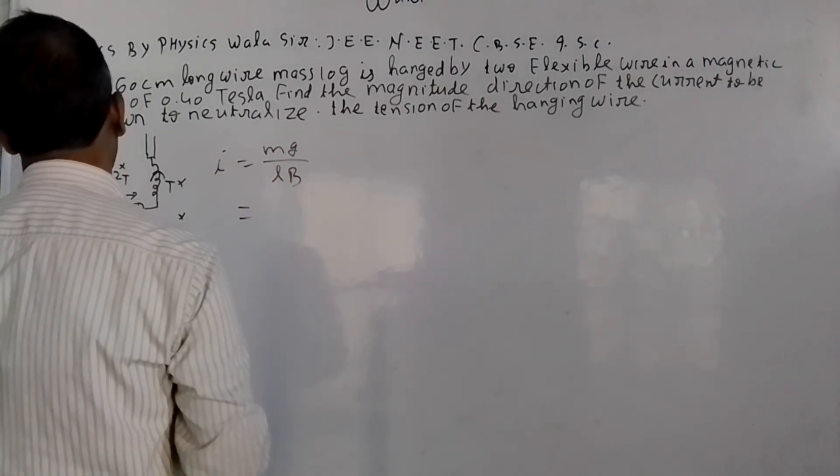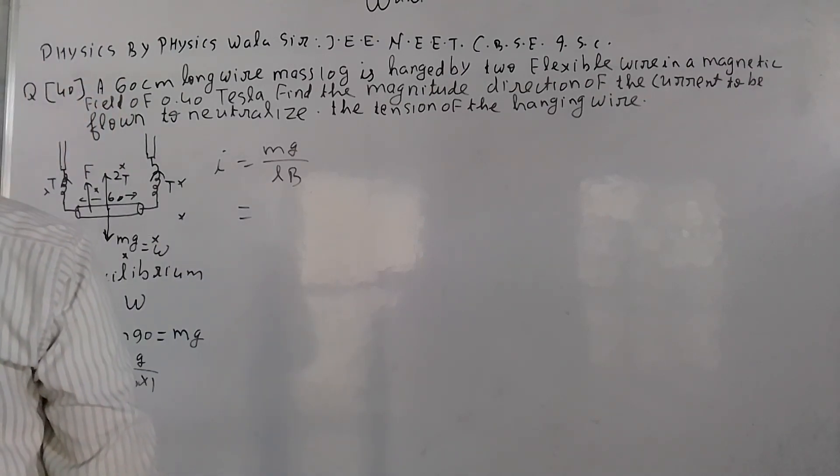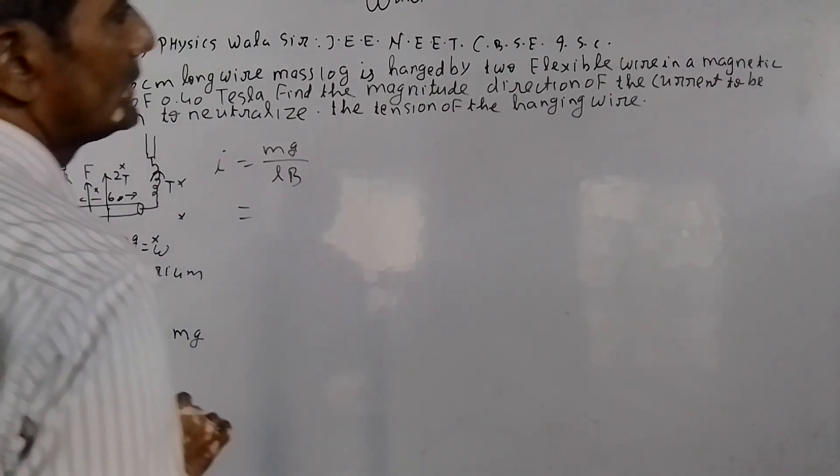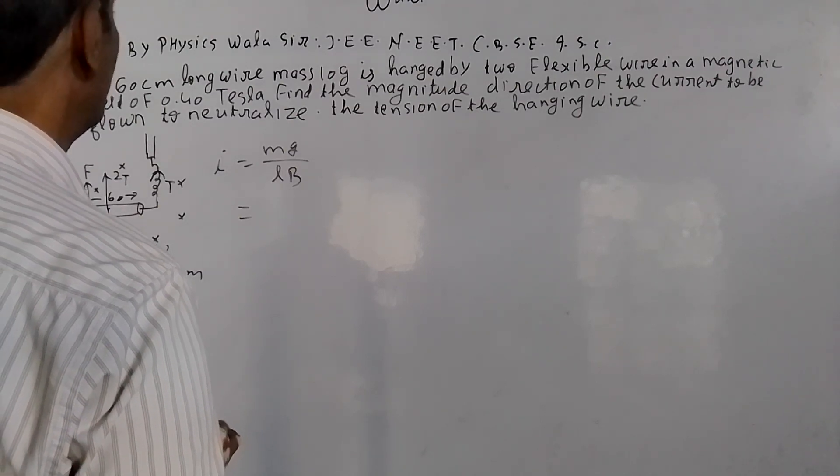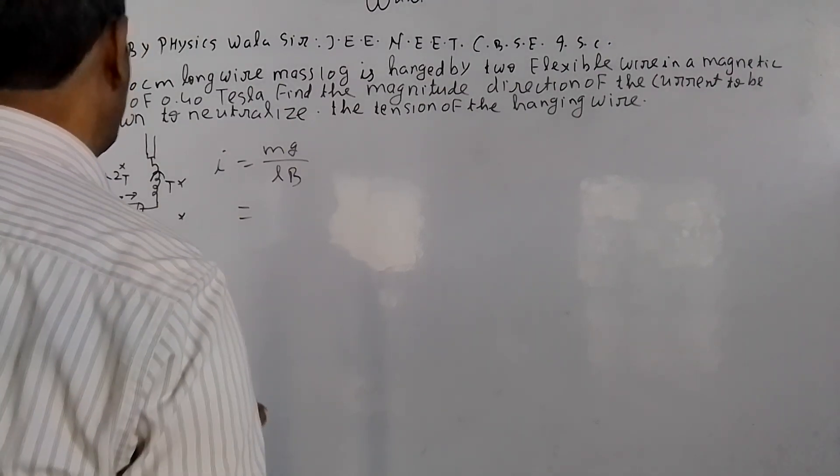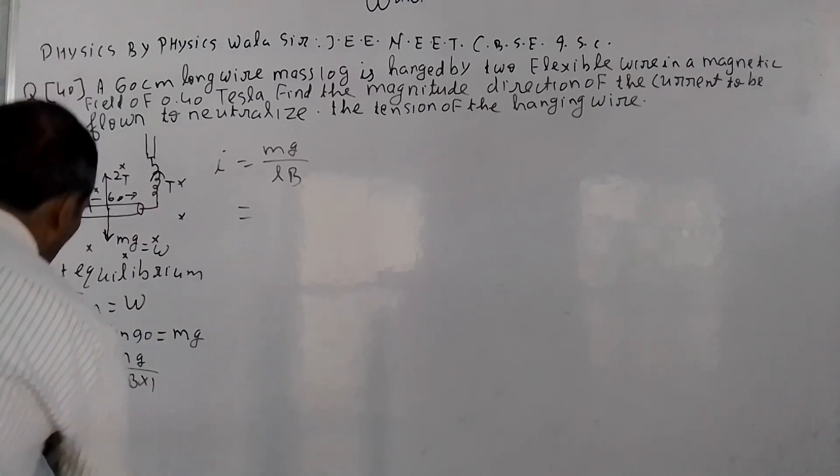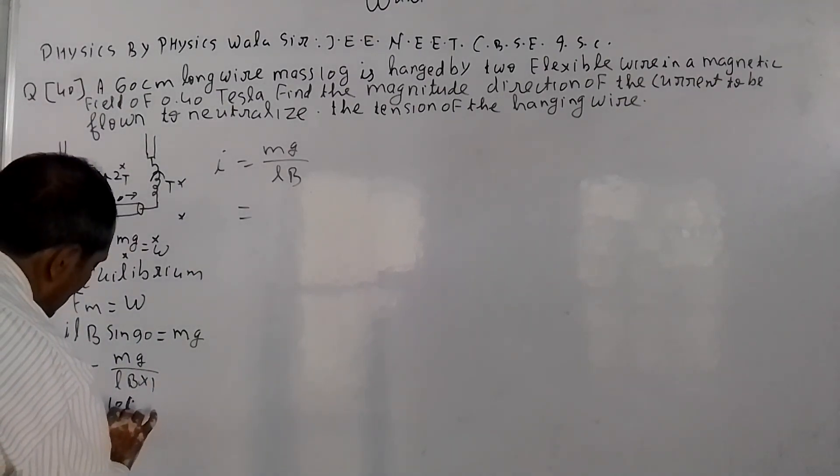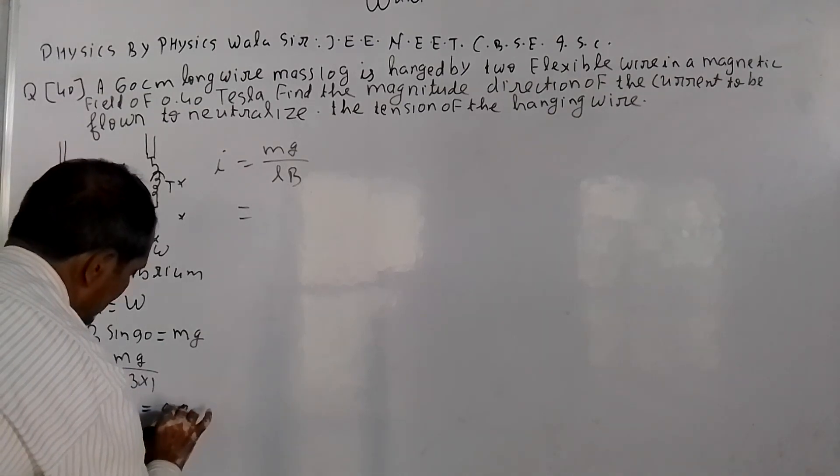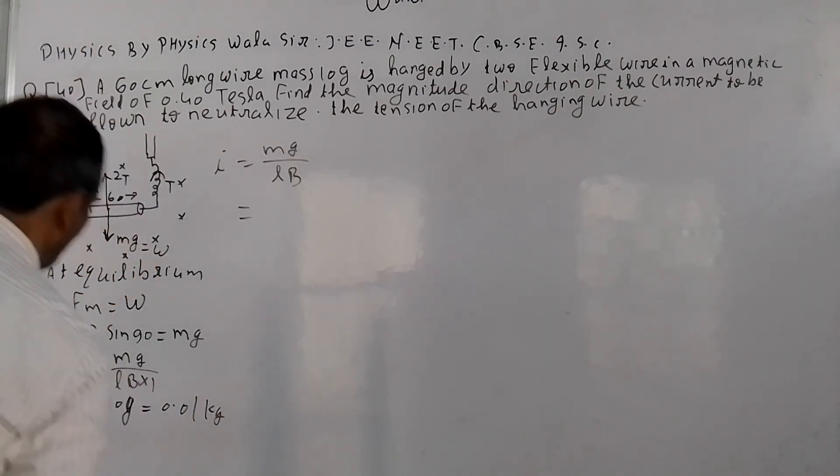The m value, how much is it? Mass here is 10 grams. This is kg, so 0.01 kg mass here.